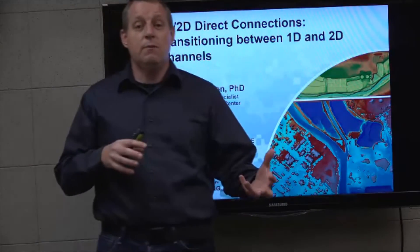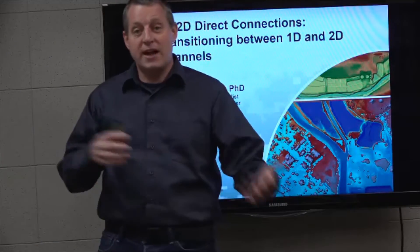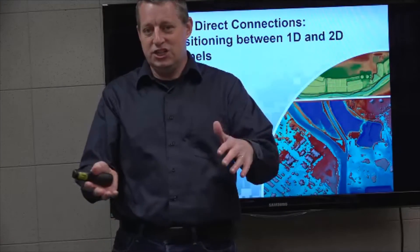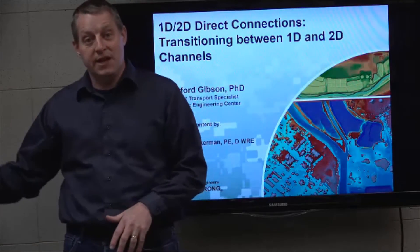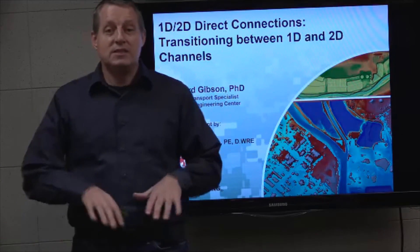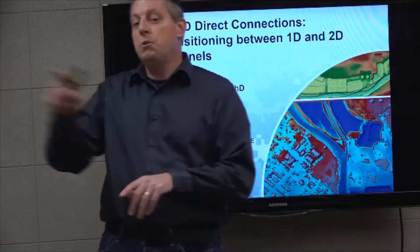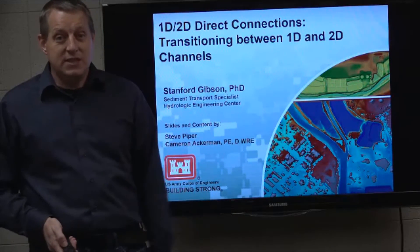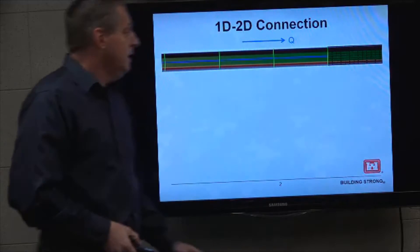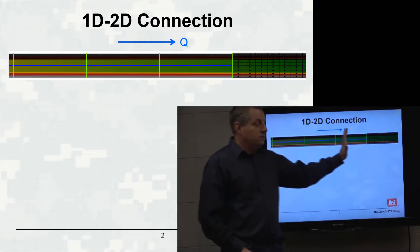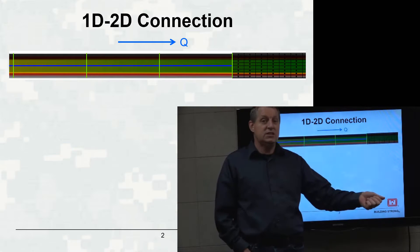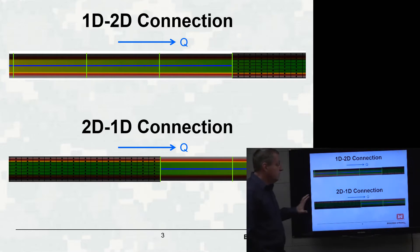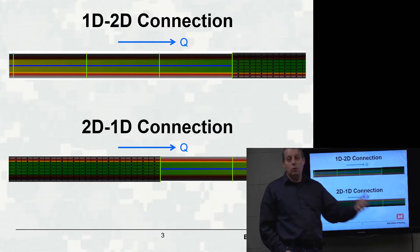So far, everything we've done dealing with interactions between 1D and 2D models has been mainly the 1D model in the channel and the 2D model in the floodplain or overbank — as flow gets out of the channel, you put it in the 2D model. But another common use case is handing off flows and stages from a 1D model down to a 2D model downstream, or vice versa.